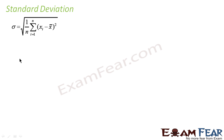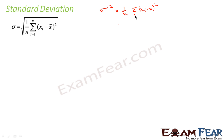We introduce a new term called standard deviation. Standard deviation is nothing but the root of variance. Variance is sigma squared, that is 1 by n into summation of (xi minus mean) squared, where i equals 1 to n. Standard deviation is nothing but the root of this.